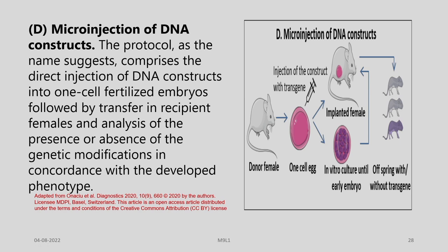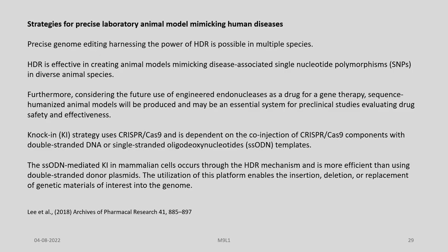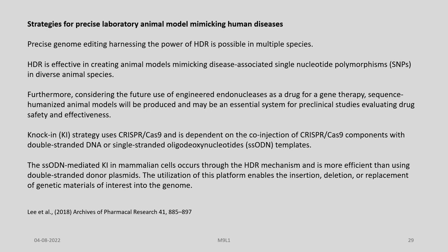The fourth type of manipulation is microinjection of DNA constructs. A one-cell egg from a donor female is injected with a construct containing the transgene and implanted into a surrogate female, resulting in offspring with or without the transgene. This system comprises direct injection of DNA constructs into one-cell fertilized embryos followed by transfer into recipient females and analysis of the presence or absence of the genetic modification.